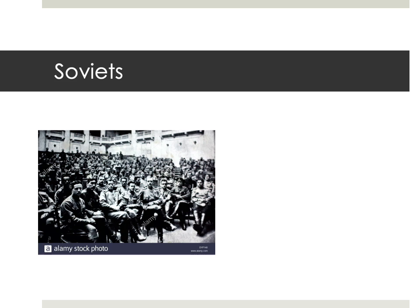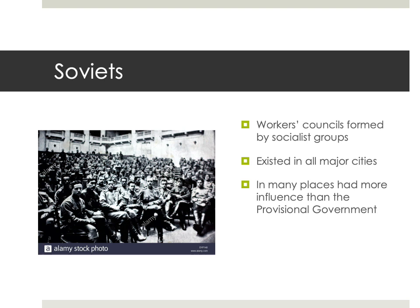The other force in Russian government at the time were what were called Soviets — workers' councils formed by various socialist groups. They had started creating Soviets as a way for socialists to organize politically, and they existed in pretty much every major city in Russia. In a lot of places, they actually had more control than the provisional government over local affairs. Originally they were dominated by moderate socialist groups known as Mensheviks, but eventually they would become more and more taken over by more radical socialists called the Bolsheviks.